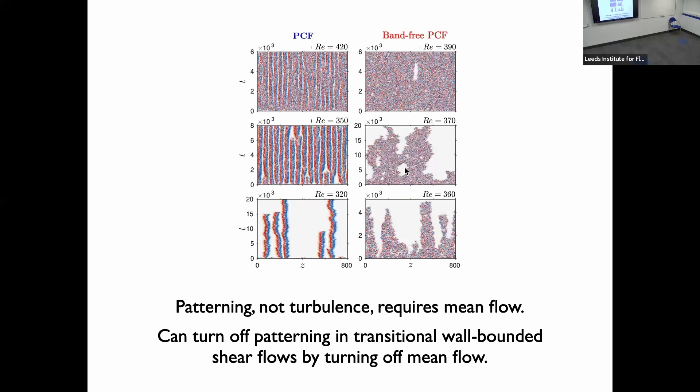Sebastian has shown that turbulence is fine — you're not suppressing turbulence. It's practically the same Reynolds numbers. It's the patterning that needs the mean flow. You can turn off the patterning by turning off the mean flow.